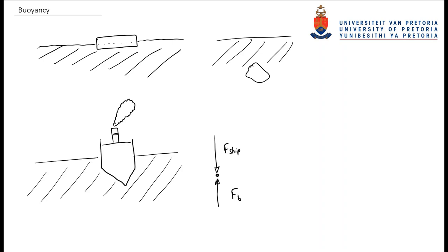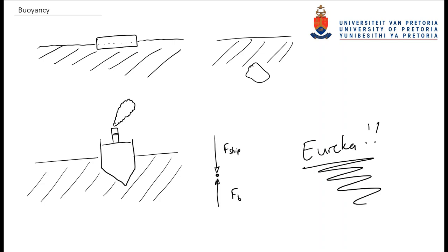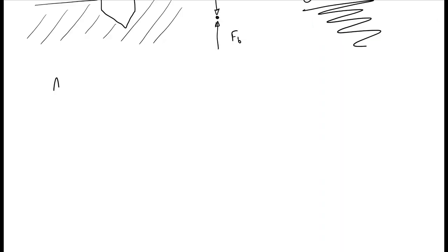But how is it possible that such a big, heavy object can actually float? To understand this, we need to understand Eureka. Now what does Eureka have to do with a ship floating?